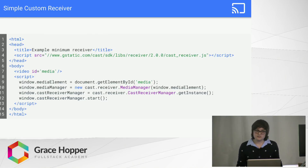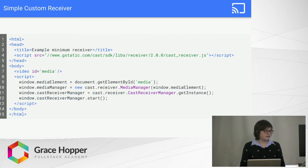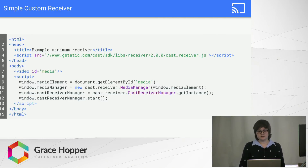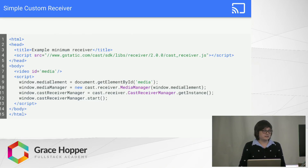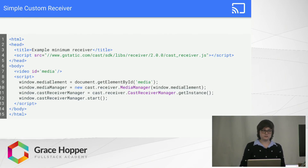Line 7 is the video element — this is where the actual video player will render with the ID of media. Then using that on line 9, we save the instance of this video player in a variable called the media element. With that we create the media manager, and the media manager is what allows communication of media-related commands and status updates, like play, pause, is playing, is paused, and so on. Then you need to create or get an instance of the cast receiver manager, which is responsible for system communication — like session connection or disconnection, or errors such as can't connect to Wi-Fi. And then line 12 just starts it all up.